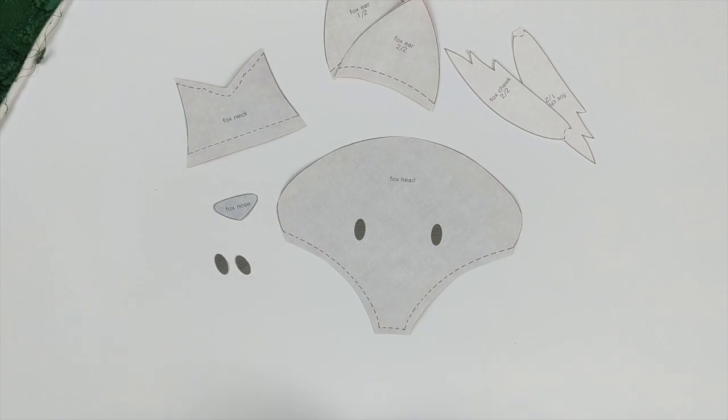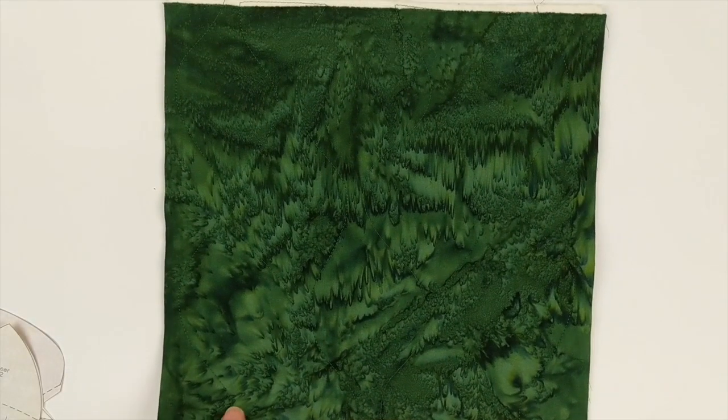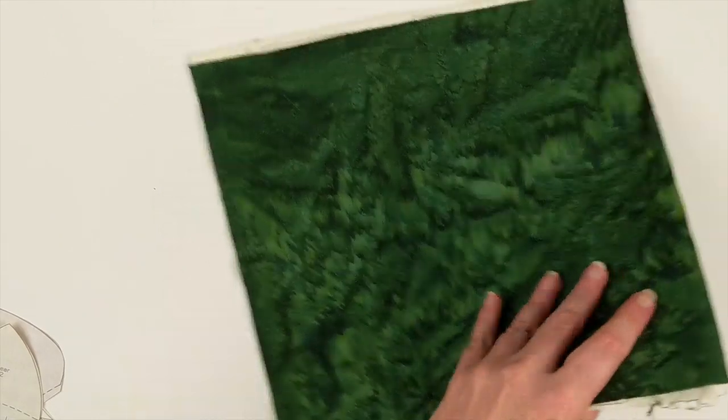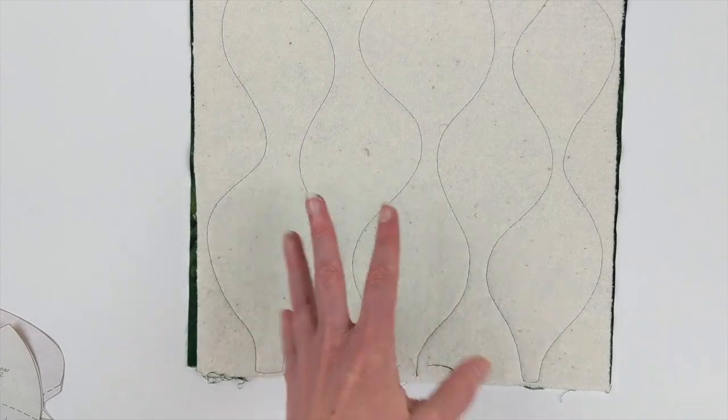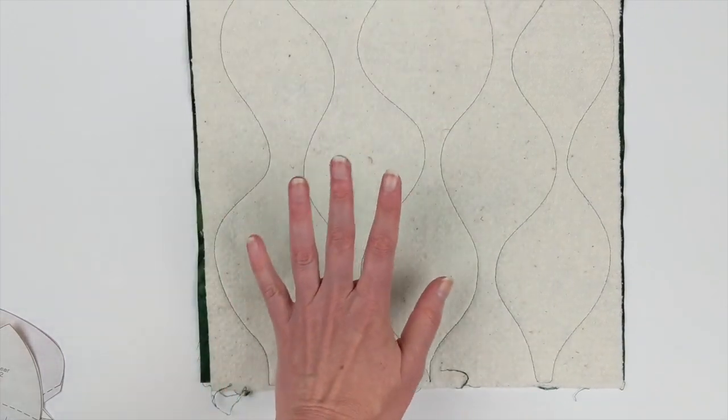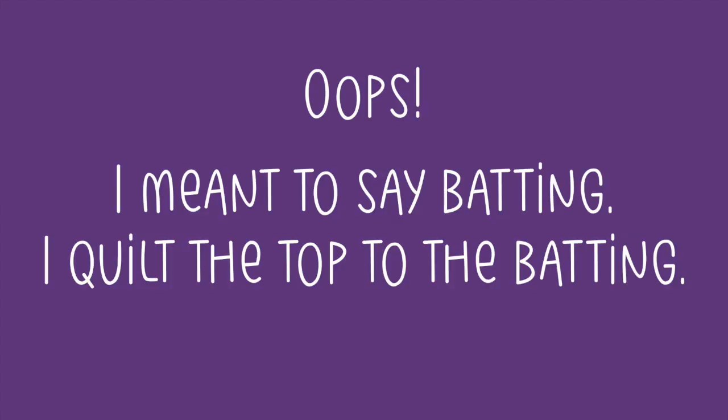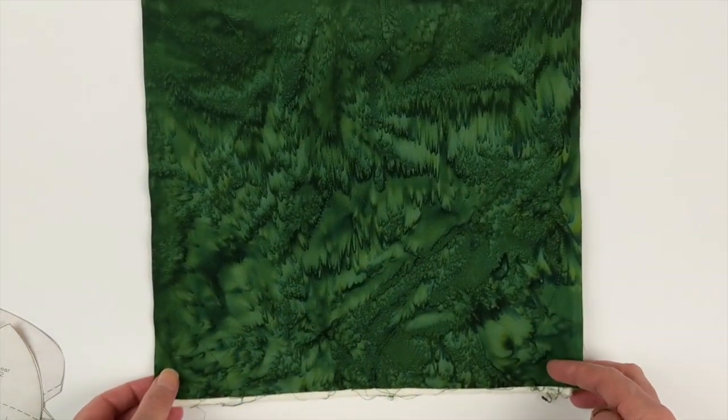Next up, we're going to get them onto our block. So I do quilt as you go, which means that I quilt all of my blocks before I do the applique. And the method that I use is I just quilt the top to the back. If you are new to Shiny Happy World and to this method of applique with fusible adhesive.